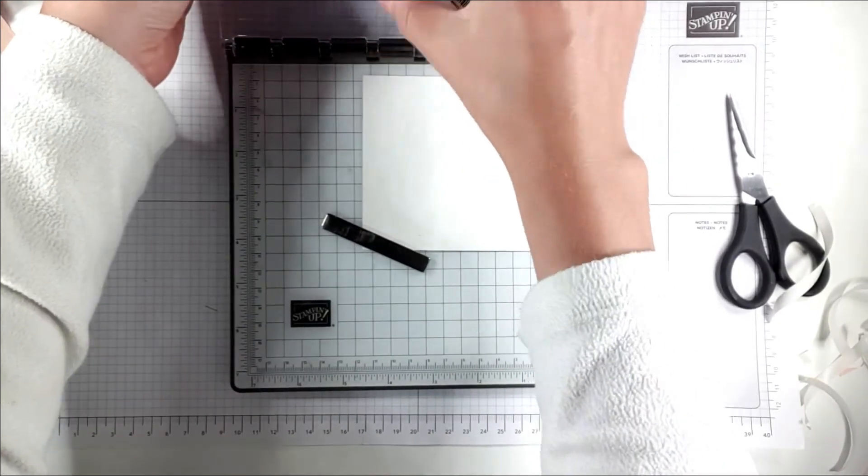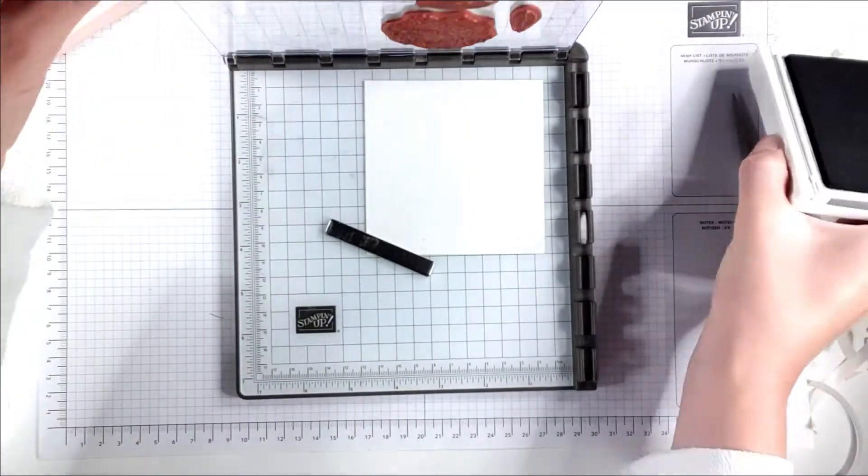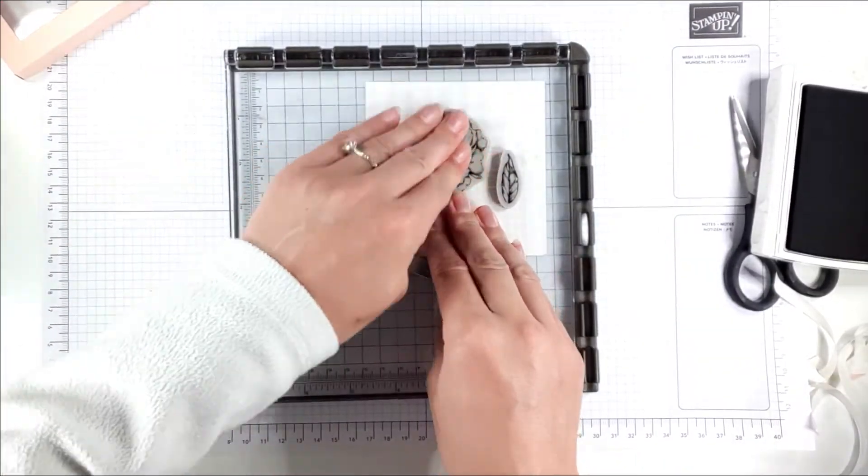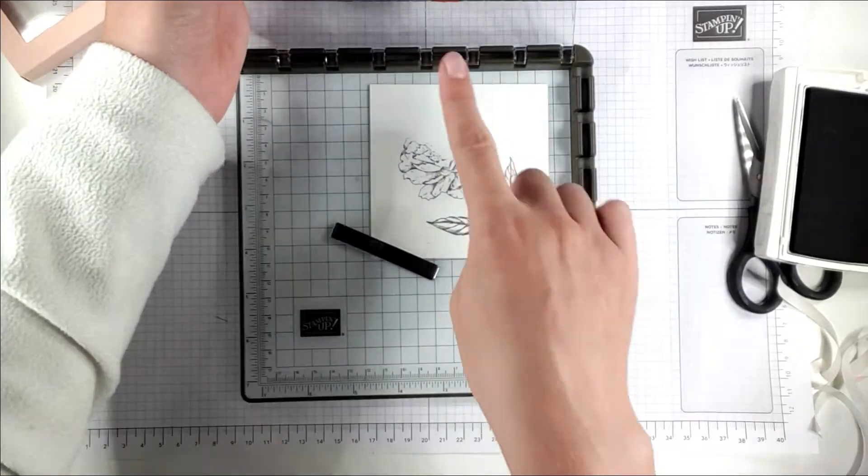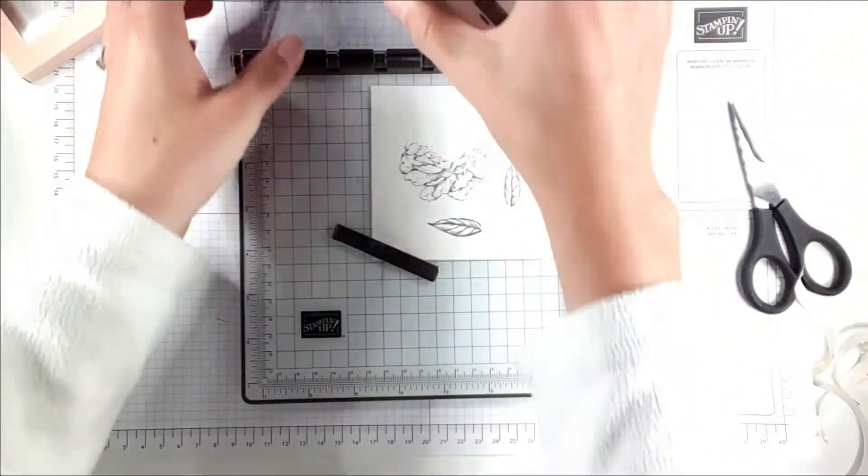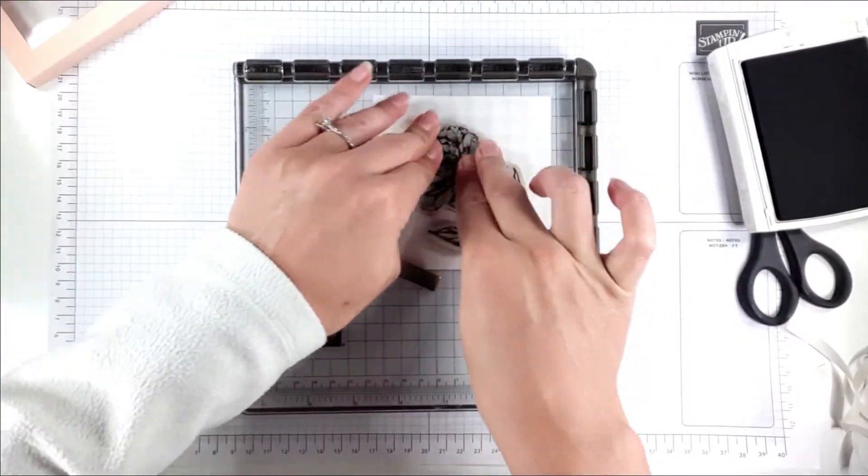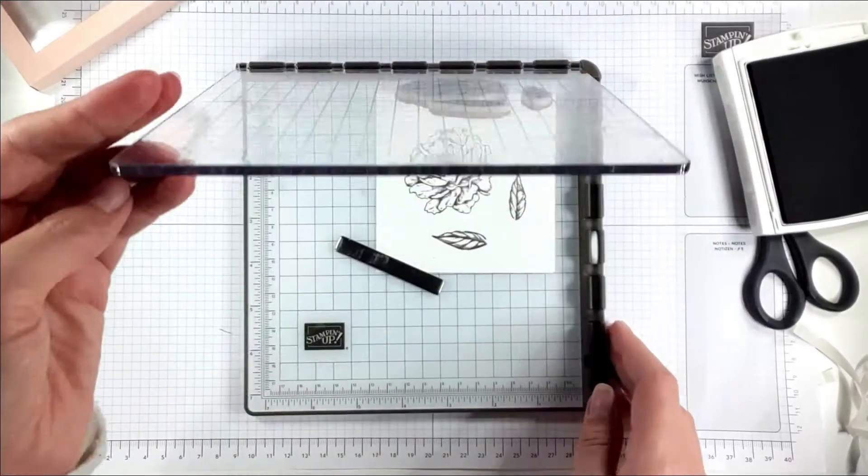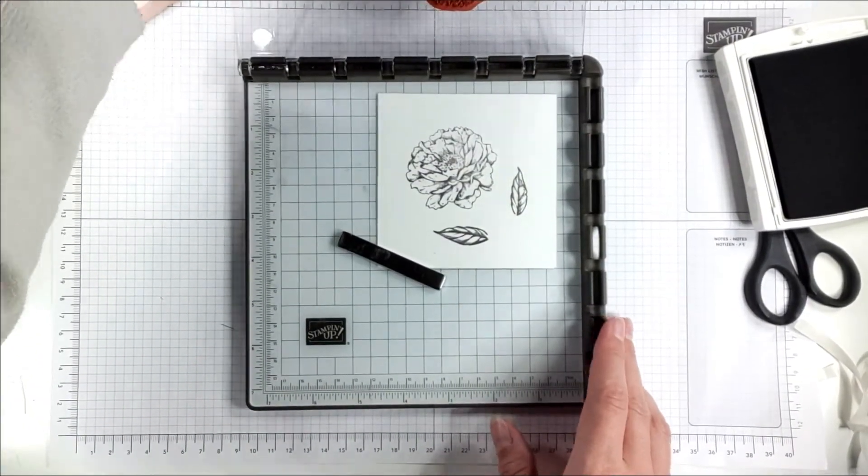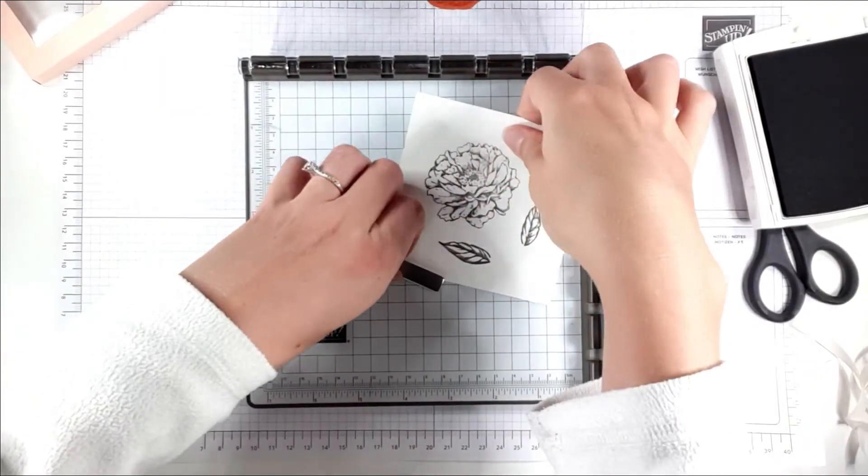I'm just going to ink up the stamps and then fold them down. You can see I've lost half my peony there so I'm just going to ink it up again. There we go, I'm happy with that image now. I'm just going to take those out and colour them.